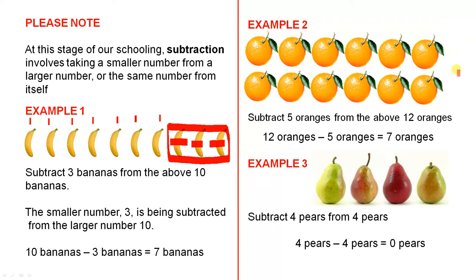Example two: subtract five oranges from the above twelve oranges. Twelve oranges minus five oranges equals seven oranges. So let's take five away. One, two, three, four, five. So the only ones we have left are one, two, three, four, five, six, seven. So we had twelve oranges, which was the large number, and we took away five oranges, which was the small number.